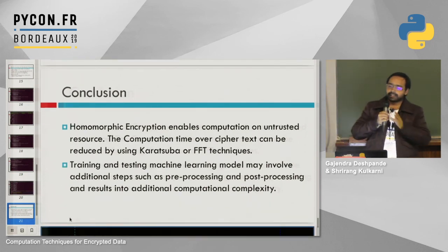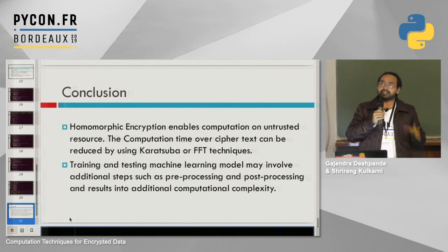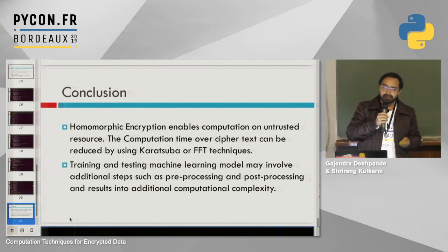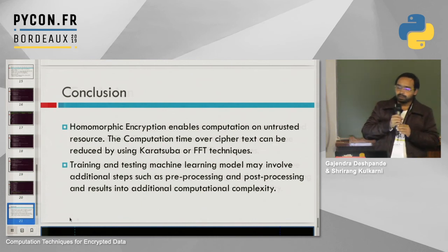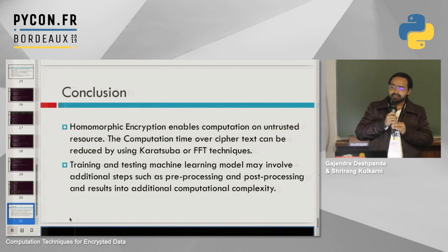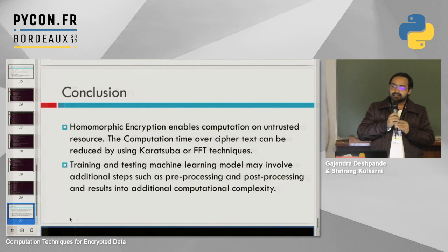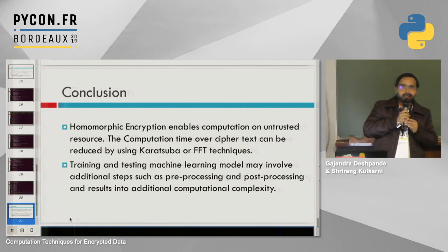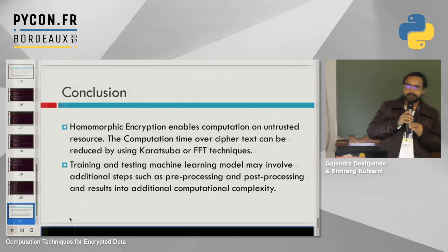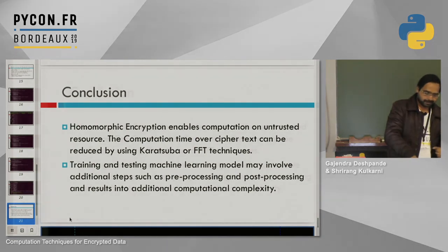In conclusion, homomorphic encryption enables computation on untrusted resources. If you have any untrusted resource such as a mobile phone and you want to use its capability for computation, you can do so using homomorphic encryption. The computation time over ciphertext can be reduced using Karatsuba or FFT techniques. Training and testing a machine learning model may involve additional steps such as pre-processing and post-processing, resulting in additional computational complexity. I thank the organizers for giving me an opportunity to present my talk. Thank you.